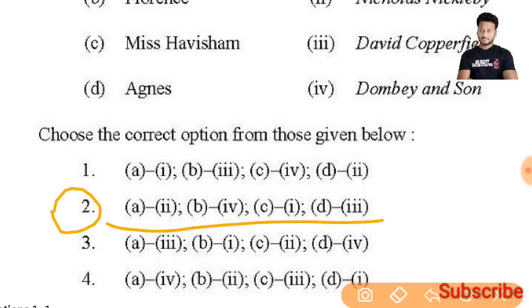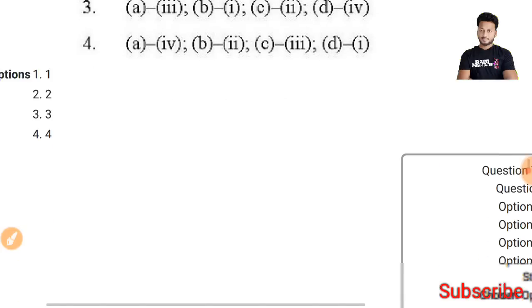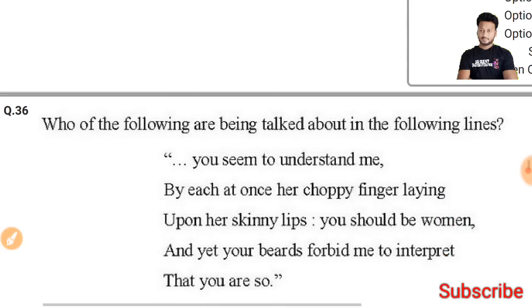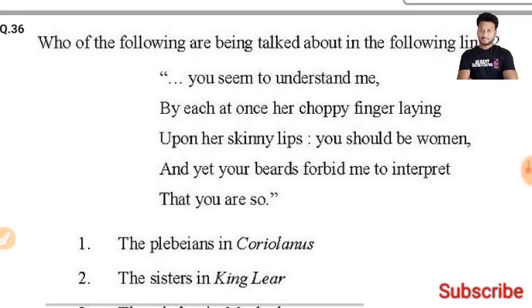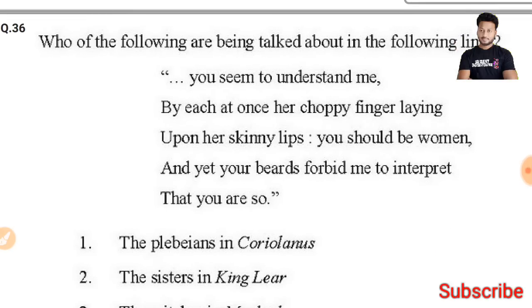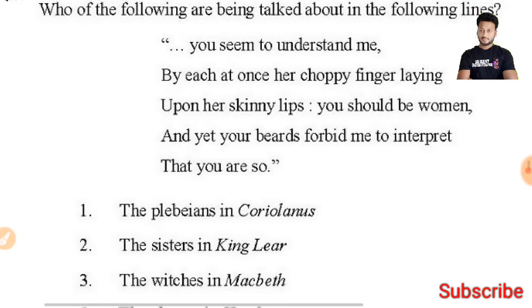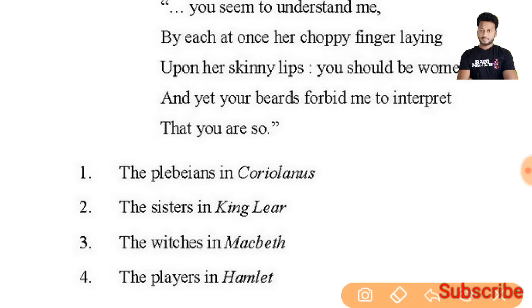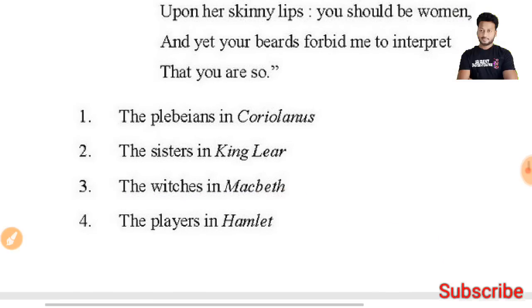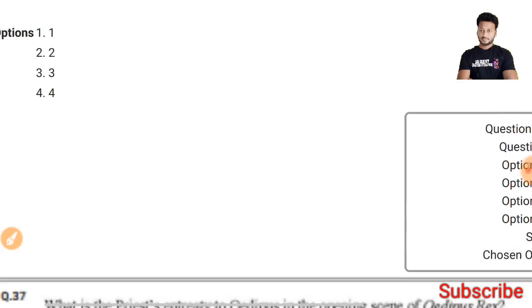Question 36: Who are being talked about in the following lines — 'You seem to understand me, by each at once her choppy finger laying upon her skinny lips: you should be women, and yet your beards forbid me to interpret that you are so'? These lines are from 'Macbeth' and are spoken to the witches.